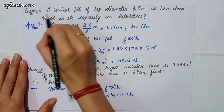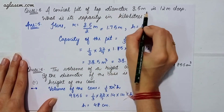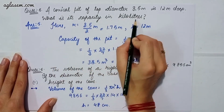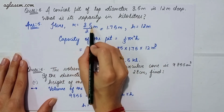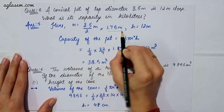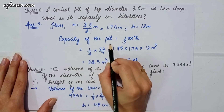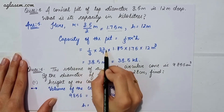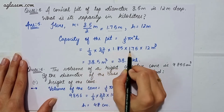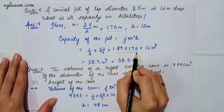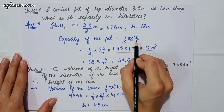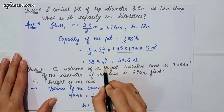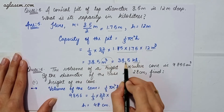Moving to our fifth question: a conical pit of top diameter 3.5 m is 12 m deep. What is its capacity in kiloliters? Radius = 3.5 / 2 = 1.75 m and height = 12 m. Capacity = 1/3 × 22/7 × 1.75 × 1.75 × 12. Solving this we get 38.5 m³. Converting m³ to kiloliters, the answer is 38.5 kiloliters.